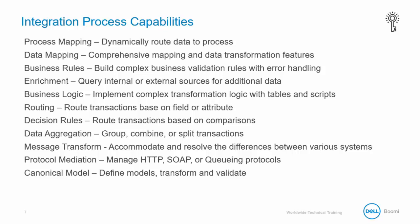Process Mapping allows you to dynamically route data to a process. Data Mapping allows for comprehensive mapping and useful data transformation features. Business Rules allows you to build complex business validation rules with error handling built in. Further, your processes can be enriched by querying internal or external sources for additional data.